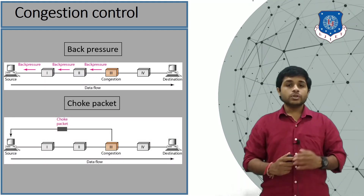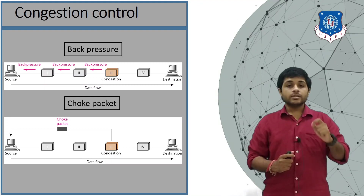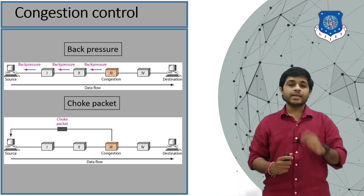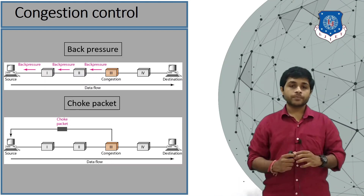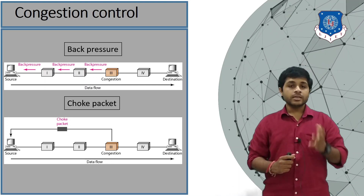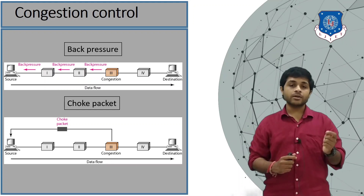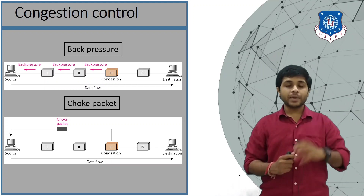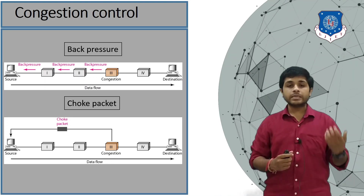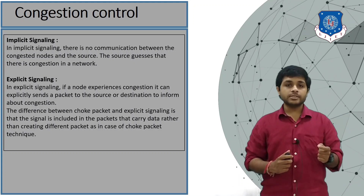The second type is the choke packet. The only difference here is that the congested device generates a special message and sends it to the source. The congested device does not stop receiving packets, but it informs the sender using a special packet that it is facing congestion and requests the sender to transmit data at a slower rate.